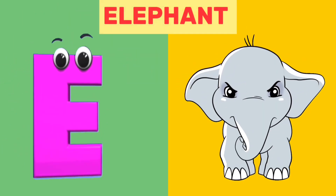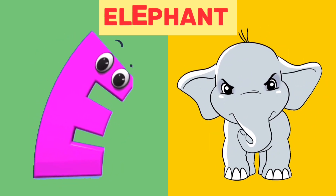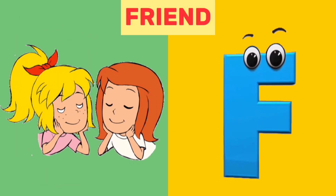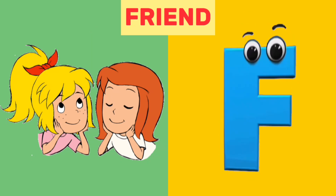E is for elephant. E, e, elephant. F is for friend. F, f, friend.